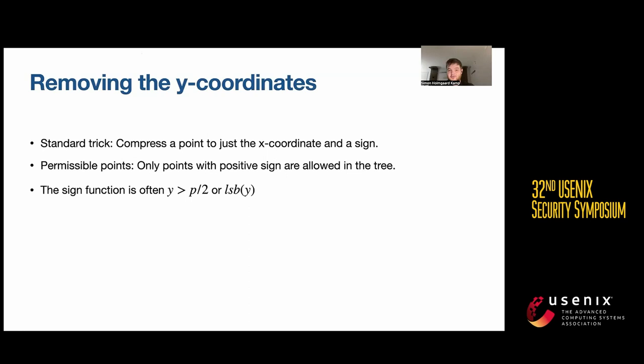But then you run into this issue that the sign of a point is usually something like Y is in the upper half of this prime, or it's the least significant bit of Y. Computing this takes all of the security parameter field operations, which would be a significant cost in our construction.